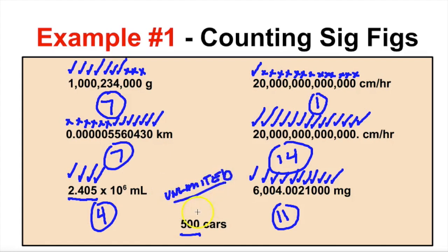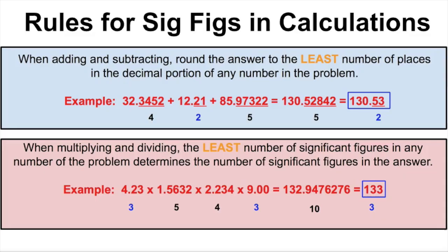Now that we know how to count significant figures, let's look at how we're going to do math in chemistry from now on. When we add, subtract, multiply, and divide, there are rules. After this, you should never have to ask your chemistry teacher where to round — you should be able to determine that yourself.